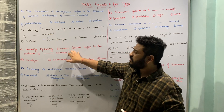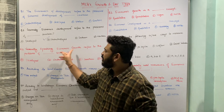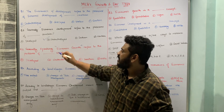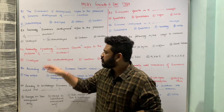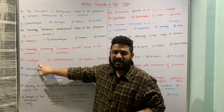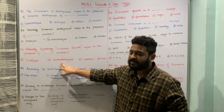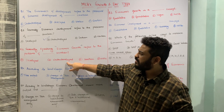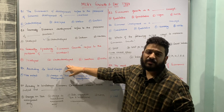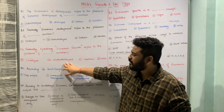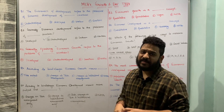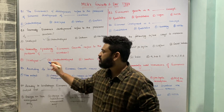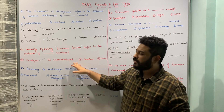The next question: 'Generally speaking, economic growth refers to the problems of ___ countries.' The options are: developed countries, underdeveloped countries, southern countries, or none of the above. Unlike economic development, economic growth generally refers to the problems of developed countries or developed nations, so option A is the correct answer.